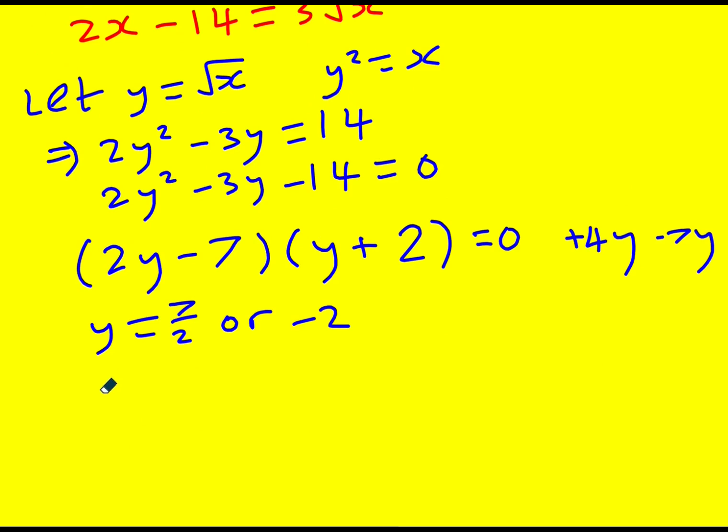Now don't forget that y was root x. So root x is equal to 7 over 2 or minus 2. We're going to reject this one because you can't square root. This is the positive square root. And therefore x, we're going to square 7 over 2 to give 49 over 4.